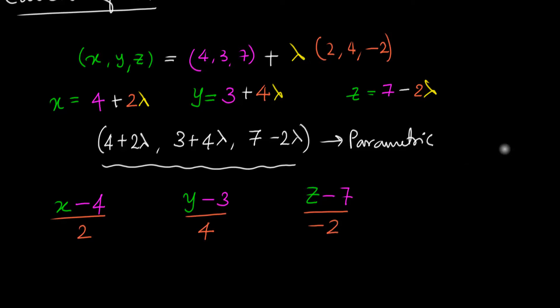They're all equal to lambda, right? So they must be all equal to each other. Ta-da! That's how we write the Cartesian format for the straight line.